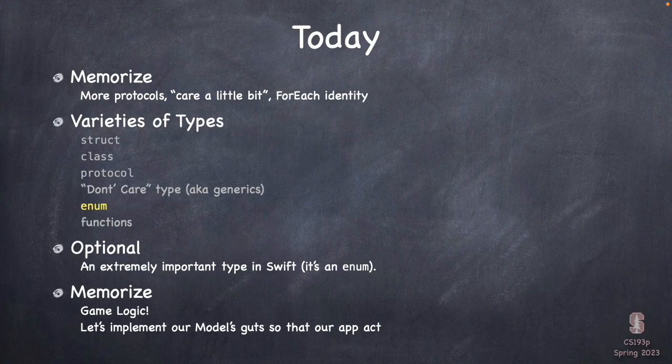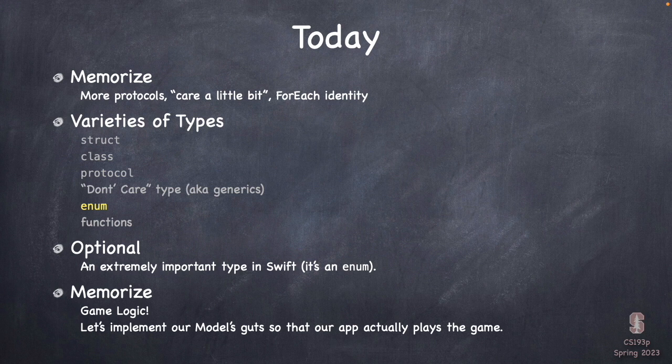We have more demo today to start, continuing the demo we started before. Then we're going to go to the slides and talk about the enum type — the last thing we didn't cover in the type system. Then we'll talk about a specific type which happens to be an enum called Optional, a really very important type, and then back to the demo to finish up the game logic for our app.